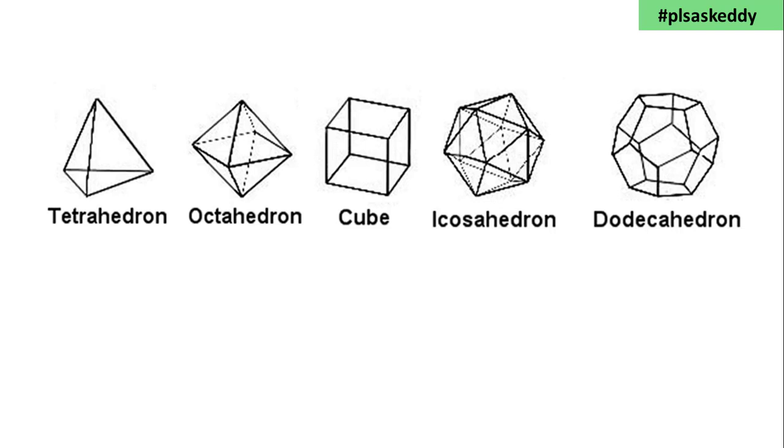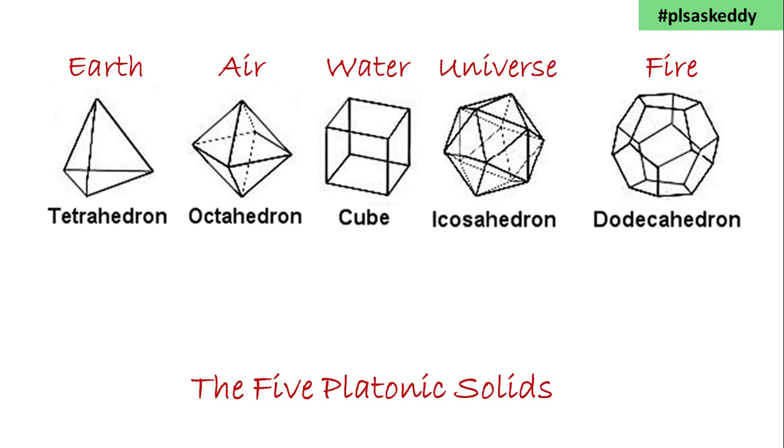Plato was so taken with the perfection of these solids. They contain a very high degree of symmetry, and consist exactly inside a sphere with each vertex on the surface. He believed that these had to correspond to what in those days were considered to be the fundamental elements of the world: Earth, air, water, universe or ether, and fire. These are the five platonic solids.